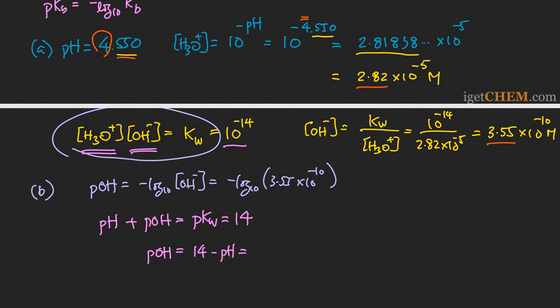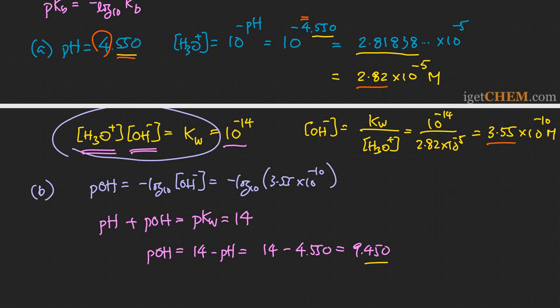Since we're given pH = 4.550, the pOH = 14 − 4.550 = 9.450. The three significant figures after the decimal point in the pOH represent the number of significant figures in the concentration measurement. Both methods give the same answer, illustrating how to calculate pH and pOH from H+ and OH- concentrations.